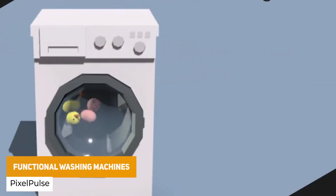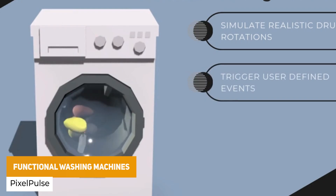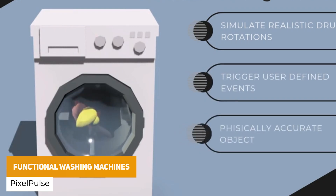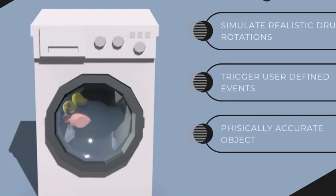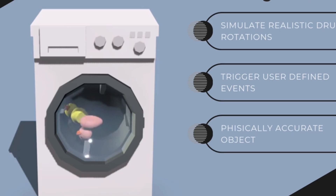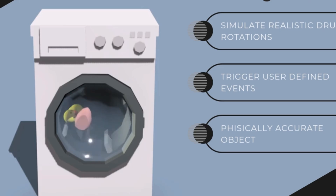There's a random one here — the Functional Washing Machine — but it's got 3 different variations, including a low poly model, a custom script, and an event manager. It allows you to put little things inside, like in the example with the rubber ducks, to simulate a washing machine.